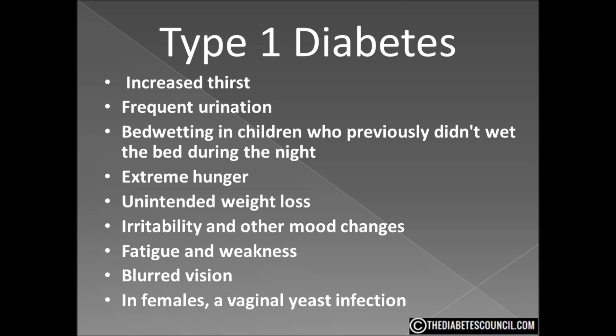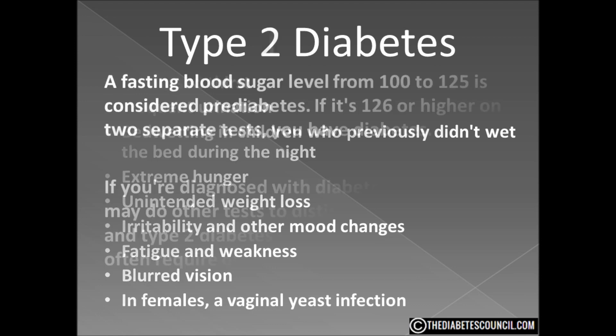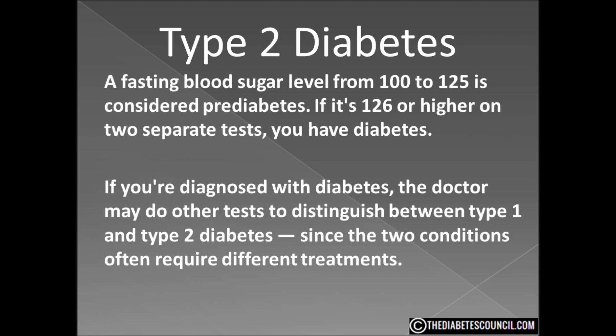There is no cure for type 1 and it cannot be reversed. To determine diabetes, a blood sample will be taken after an overnight fast. A fasting blood sugar level less than 100 is normal. A fasting blood sugar level between 100 and 125 is pre-diabetes. If it's 126 or higher on two separate tests, you will have a diagnosis of diabetes.